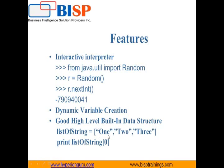Dynamic variable creation is permitted, and there are high-level built-in data structures. For example, with a list of strings like [1, 2, 3], we can use a print statement to print the element at index zero. There are many more features of Jython: it's platform independent, we can import Java libraries directly into Python code, and we can implement Java functionality within Python. We just need to install and set up Jython on our system first.